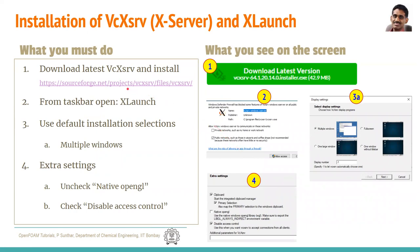Now we also need another application called VcXsrv — an X server. VcXsrv is an application which runs on Windows and can display graphical applications from Linux. Just like opening Word or PowerPoint gives you a graphic user interface in Windows, if you want to display Linux graphic user interface on Windows, you need this. While you don't need any graphic user interface for running OpenFOAM itself, for displaying results using Paraview, we need this X server. You can get the latest version from sourceforge.net — the current latest version is 64.